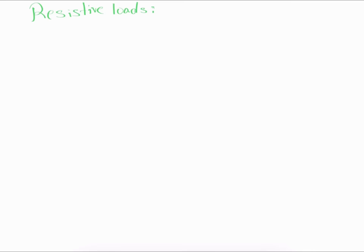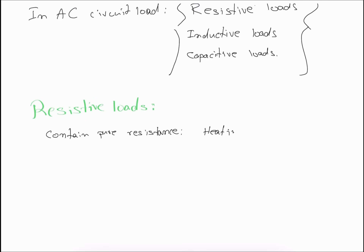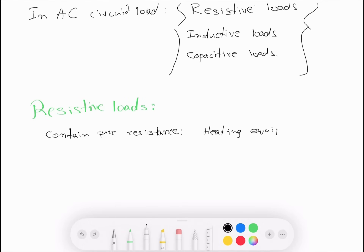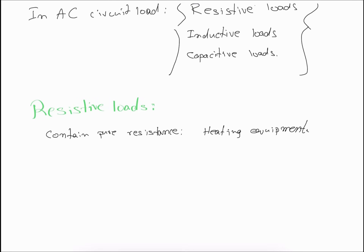Let's talk about resistive loads. A resistive load is a load that contains pure resistance only. An example would be heating equipment — that is an example of a pure resistive circuit. Resistive loads are characterized by three factors.